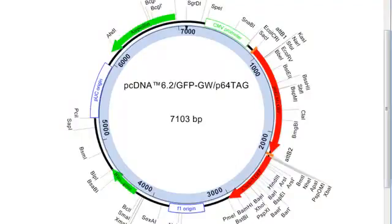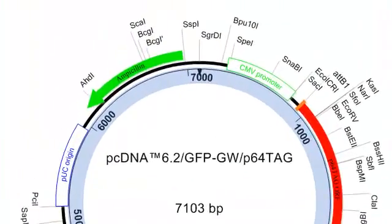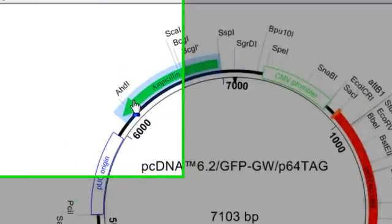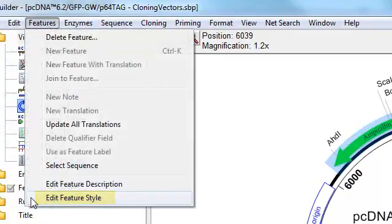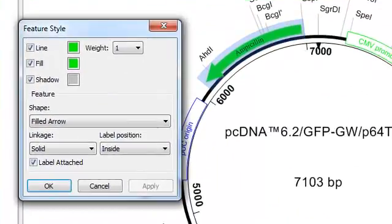Another way to change the appearance of your map is to edit your feature styles. So, for example, if I wanted to change the color of this ampicillin feature, I could just double-click on it to select it and then choose Features, Edit Feature Style, and that shows me the Feature Style dialog.